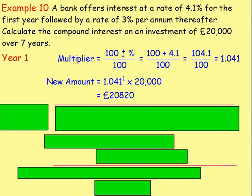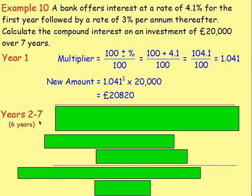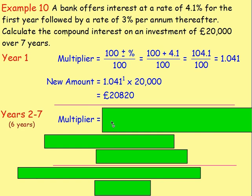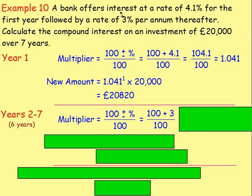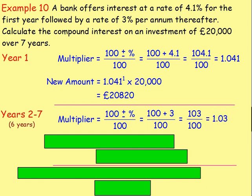Now we need to consider the other years. You could work out 3% for year two and add it on, then 3% of the new amount for year three, and so on — but that would take you until Christmas. The quicker way is to use multipliers. Years two to seven is six years. So you use your multiplier because it's going to be increasing by 3% for six years. It's 100, add on three, which is 103, divide by 100, and you get 1.03.